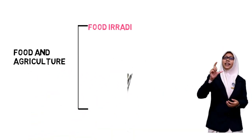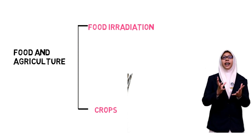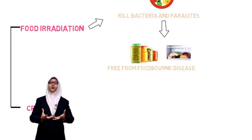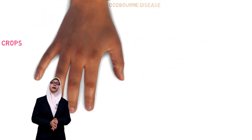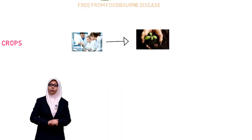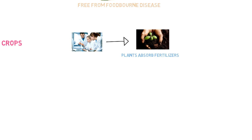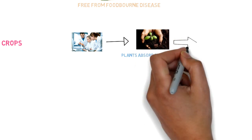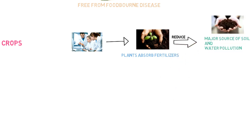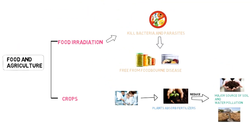Lastly, food and agriculture. In the food industry, irradiation is used to kill bacteria and parasites that can cause foodborne disease. Agriculture researchers also use radiation to show how plants absorb fertilizers, helping researchers learn how to apply fertilizers and how much to use. Therefore, this prevents overuse and reduces a major source of soil and water pollution.